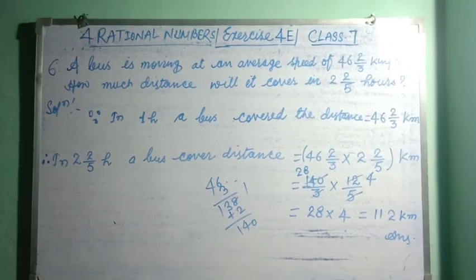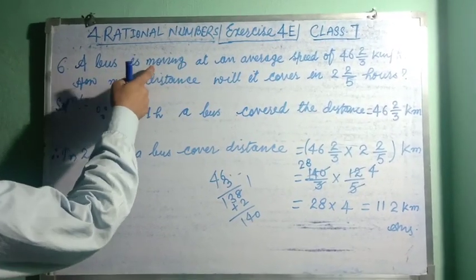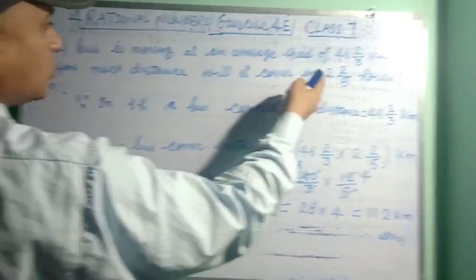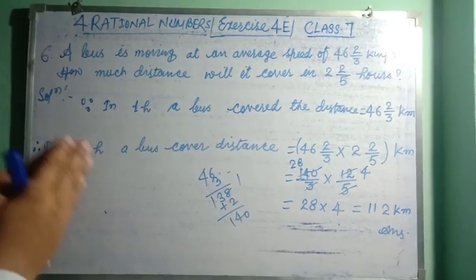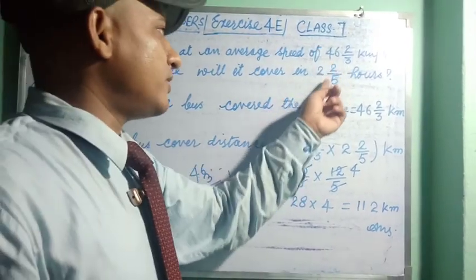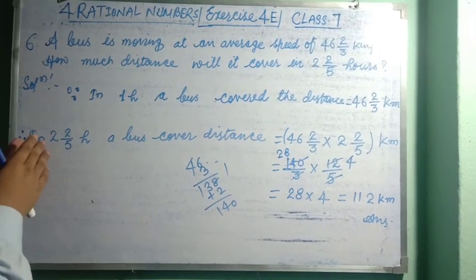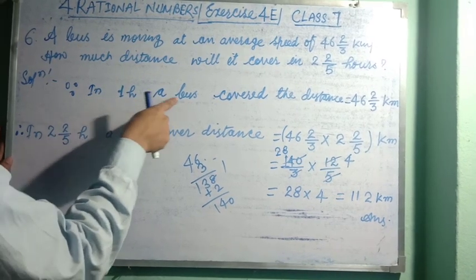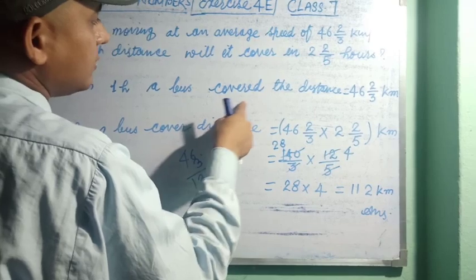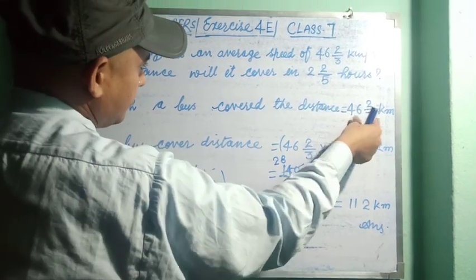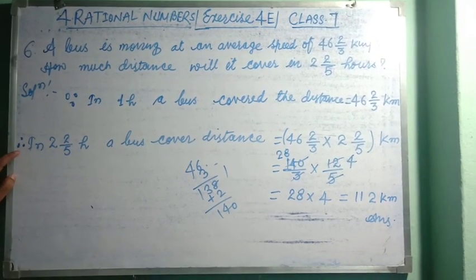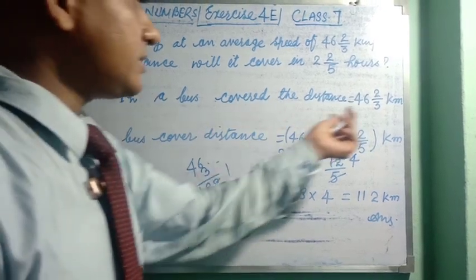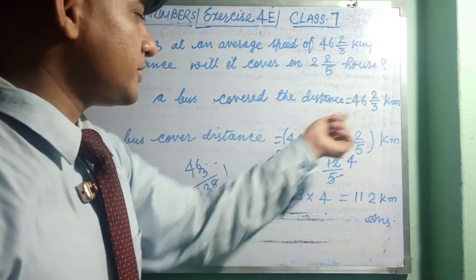The last question — Question 6 — is a word problem. A bus is moving at an average speed of 46 and 2/3 kilometres per hour. How much distance will it cover in 2 and 2/5 hours? We need to find the distance covered. Speed given is 46⅔ km per hour. In 2 and 2/5 hours, distance equals speed multiplied by time — so we multiply the mixed fractions together.